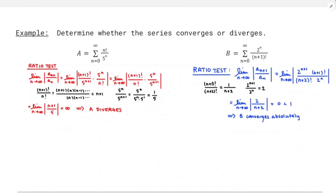Alright, and there you go. I think that was a good set of examples — one where the ratio test came back inconclusive, one showing that the series diverged, and one showing that it converged absolutely. We're going to do other things with the ratio test, specifically find the interval of convergence or radius of convergence for a power series. But we're going to do that in the next video. So that's going to be all for this one — thanks for watching.